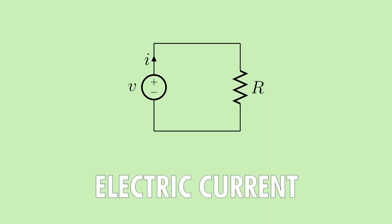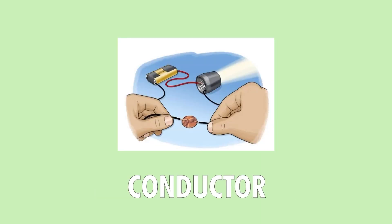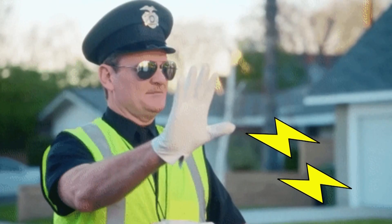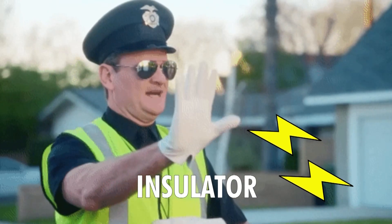In electrical engineering, a stream of charged particles is called an electric current. A conductor is a type of material that permits these charges to flow. The opposite of a conductor — something that stops electric current — is an insulator.